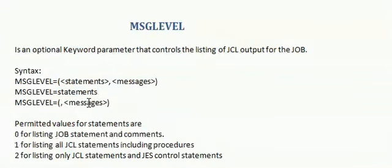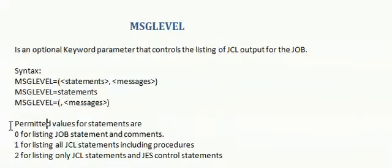If you want to populate only messages, then you have to code MSGLEVEL equal to comma then messages. The permitted values for statements are 0, 1, and 2. 0 specifies listing of job statement and comments; 1 specifies all JCL statements including procedures; 2 is for listing only JCL statements and JS control statements.